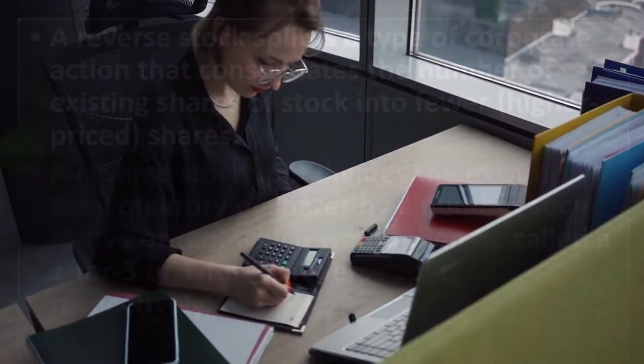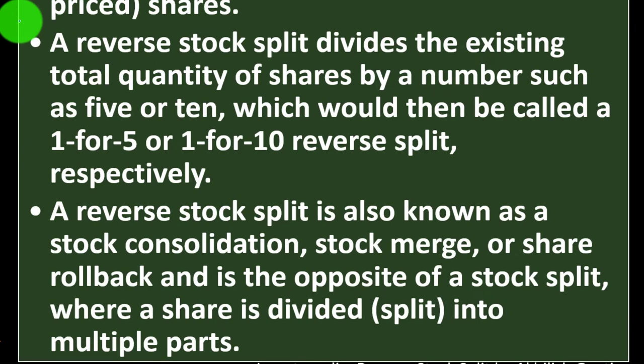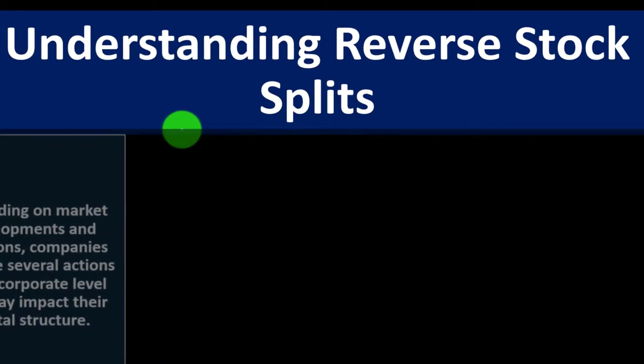A reverse stock split divides the existing total quantity of shares by a number such as 5 or 10, which would then be called a 1-for-5 or 1-for-10 reverse split, respectively. A reverse stock split is also known as stock consolidation, stock merge, or share rollback, and is the opposite of a stock split where a share is divided into multiple parts.